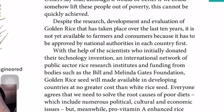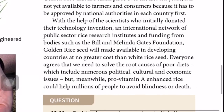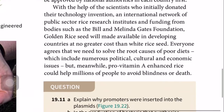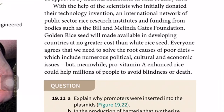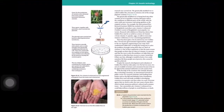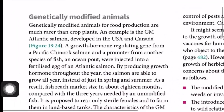One argument against golden rice is that the main reason people eat diets short of vitamin A is poverty, and the solution is to help people out of poverty so they have access to a more varied diet. Others say that while this would be better, it cannot be quickly achieved. Despite over ten years of research, development, and evaluation, golden rice is not yet available to farmers or consumers because it has not been approved by national authorities. With help from scientists and funding from bodies such as the Bill and Melinda Gates Foundation, golden rice seed will be made available in developing countries at no greater cost than white rice seed.